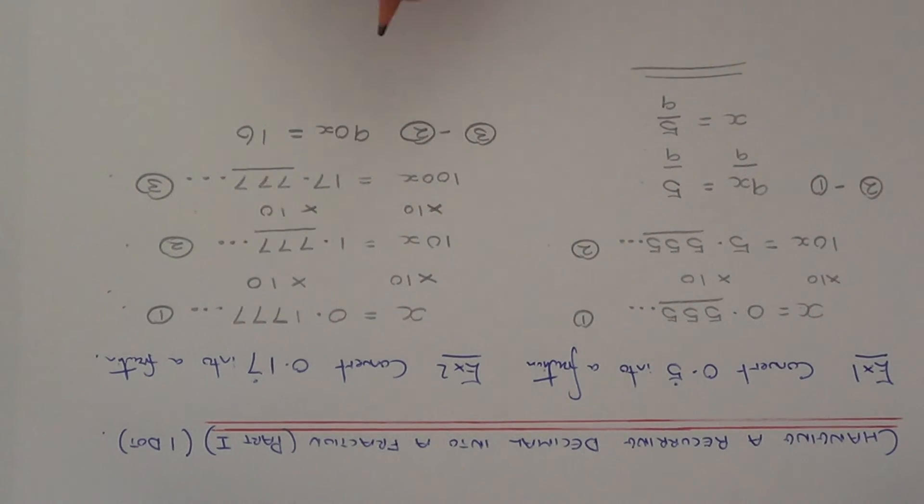So if I solve this equation by dividing both sides by 90, this will give me x is equal to 16 90ths. And this fraction I can cancel down if I divide it by 2. And I get 8 45ths. And this is my final answer.